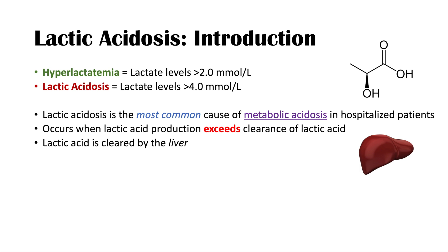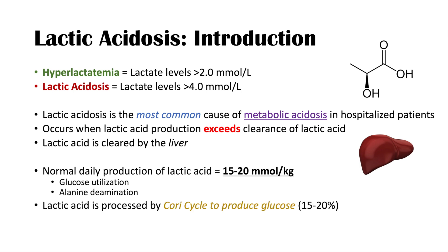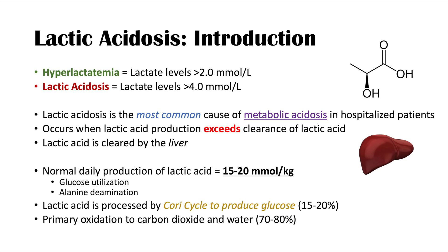It is normal to make lactic acid. Normal daily production is generally from 15 to 20 millimoles per kilogram of body weight, produced through glucose utilization and alanine deamination. Lactic acid can then be processed by the Cori cycle to produce glucose — about 15 to 20% is processed this way — and most of the rest, about 70 to 80%, undergoes primary oxidation to carbon dioxide and water.